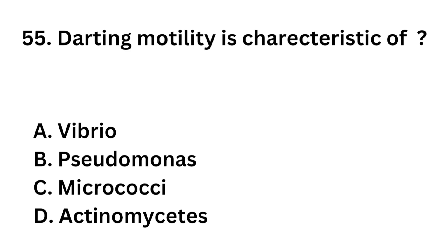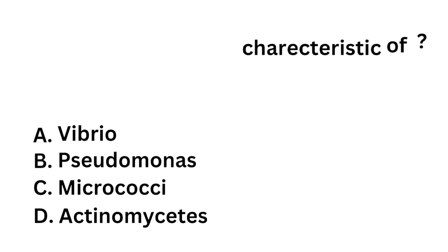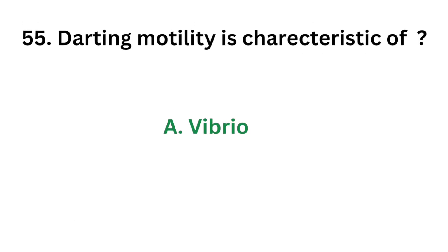Question number 55: Darting motility is a characteristic feature of which organism? Option A: Vibrio. Option B: Pseudomonas. Option C: Micrococcus. Option D: Actinomycetes. The correct answer is Option A: Vibrio. Darting motility is characteristic of Vibrio.